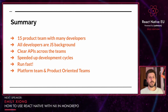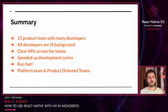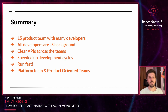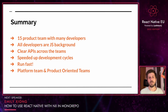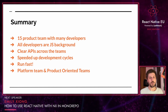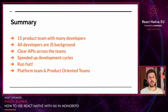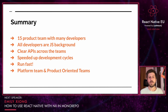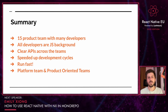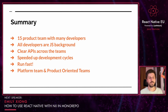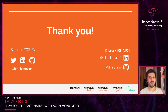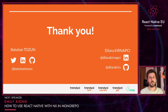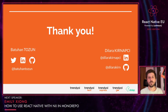To wrap up: we have 15 product teams with many developers, and all developers have JavaScript backgrounds — they are developing features with just JavaScript. We have clear infrastructure APIs across the teams and we have sped up development cycles for continuous development. Our build time and testing time is much faster compared to the monolithic architecture. We have a platform team for developing the infrastructure and product-oriented teams for developing the features. Thank you so much for listening — you can reach us with this contact information if you have any questions or concerns. See you at the Q&A section.